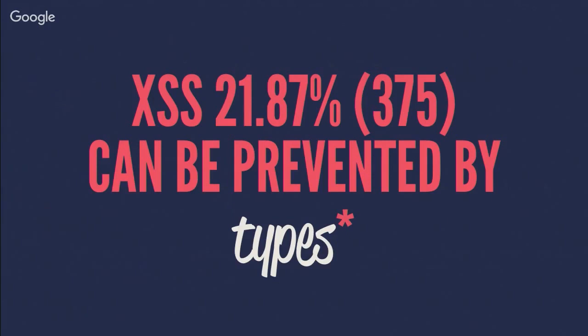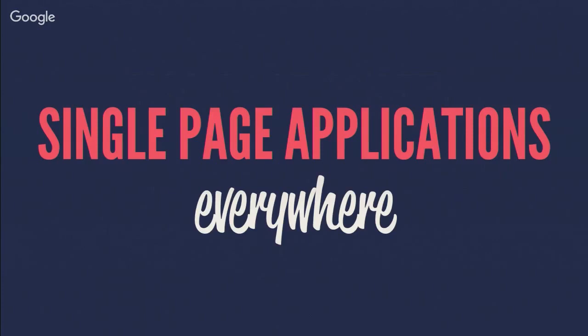Cross-site scripting is also a big class of bugs and can also be mitigated by types. As mentioned, with an HTML combinator library there are also classes of bugs that can't be prevented, but the key motivation is that Haskell really helps to prevent this kind of bug.